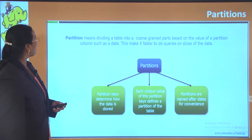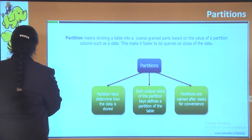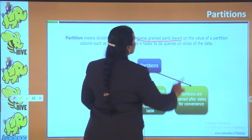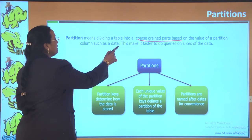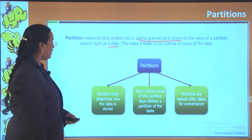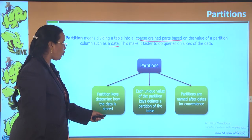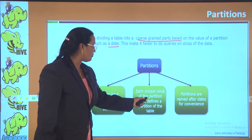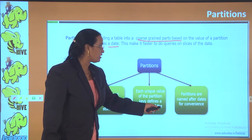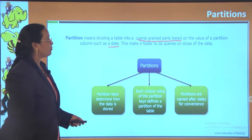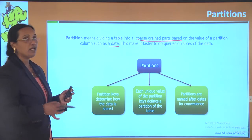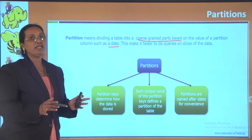Partitions mean dividing a table into coarse-grained parts based on the value of a partition column, such as a date. This makes it faster to do queries on a slice of the data — the partition key determines how data is stored. Each unique value of the partition key defines one partition of the table, and partitions are typically named after dates for convenience. Essentially, partitions divide a table into smaller parts to make data more comfortably accessible.